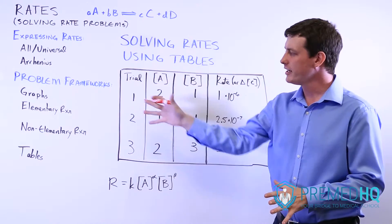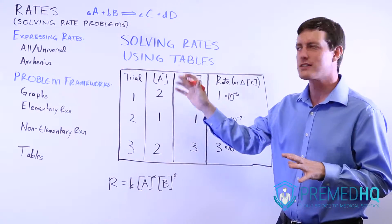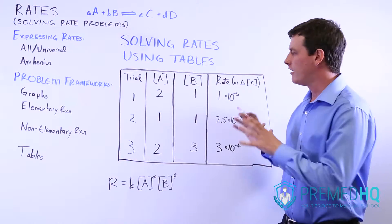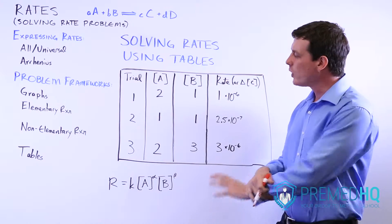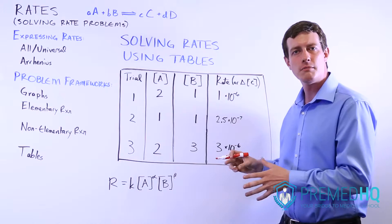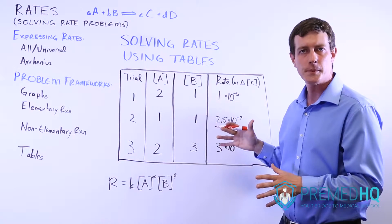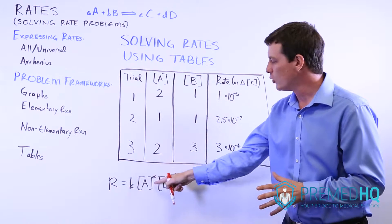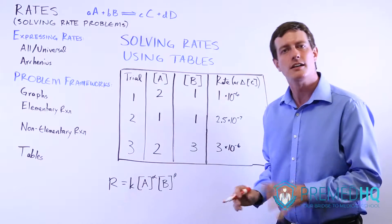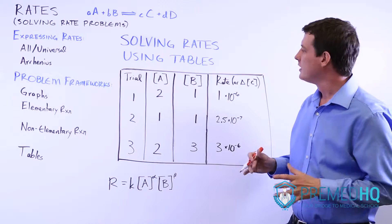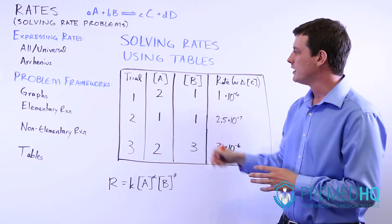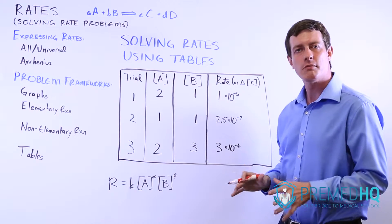The last part of this double agent model, which goes through all the different ways you can express and deal with problems involving rates, involves tables. Tables are quite a common way of solving rate problems, and they're quite good because they're purely experimentally derived. You don't need to worry about whether it's elementary or non-elementary. All you look at is what the numbers tell you, and it allows you to determine the order with respect to each reactant, and also mathematically determine the rate constant.